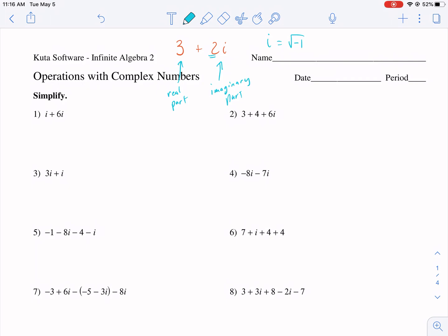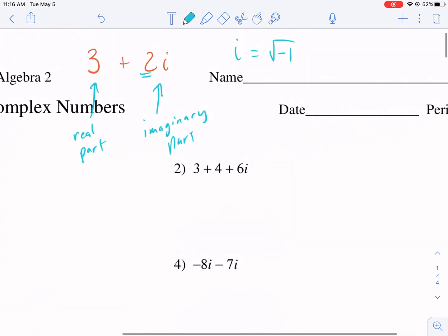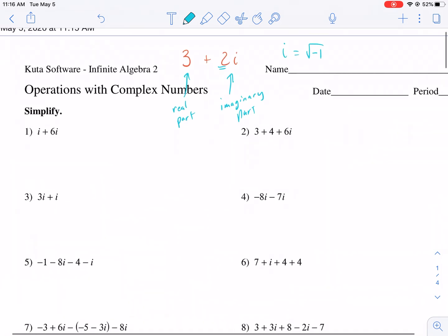Normally we can't take the square roots of negative numbers, but using the designation i, we can take negative square roots.